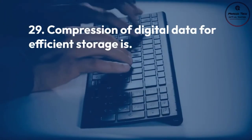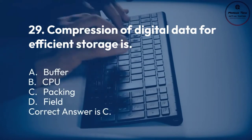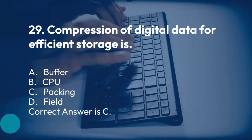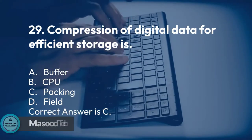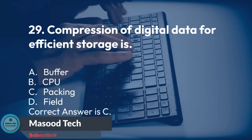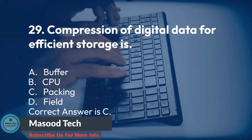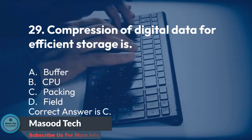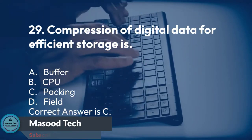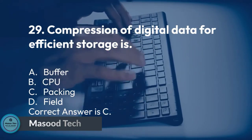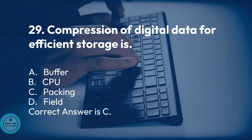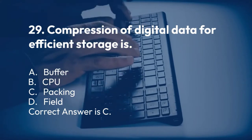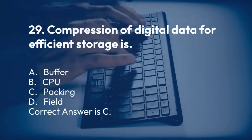Number 29. Compression of digital data for efficient storage is: A. Buffer. B. CPU. C. Packing. D. Field. Correct answer is C.